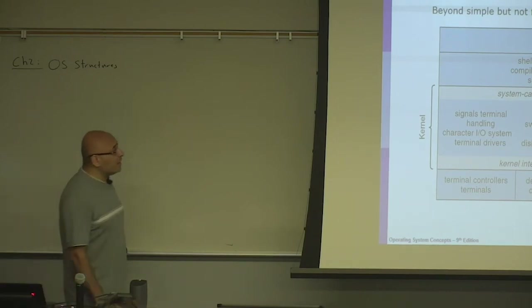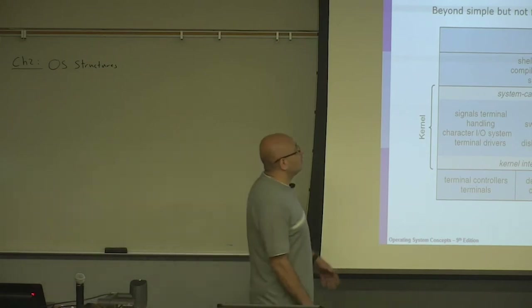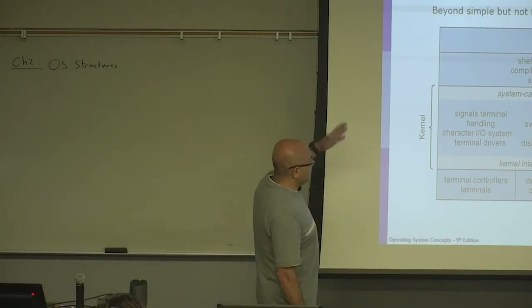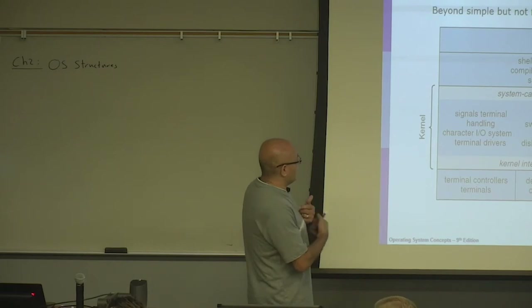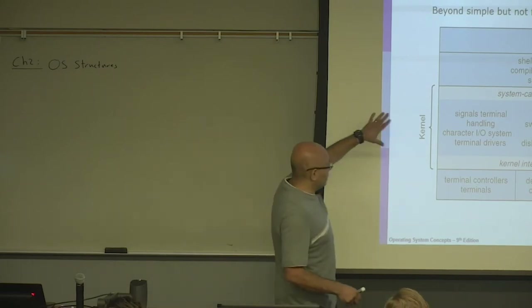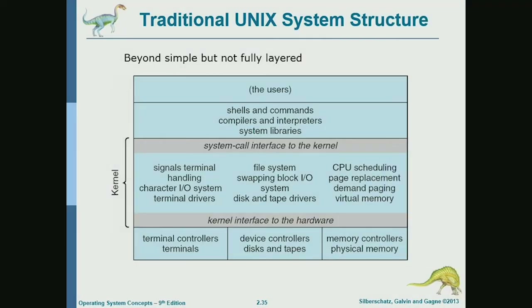If we look at a classical Unix system, there isn't much structure. There is a big kernel that has almost everything in it, with an interface to the hardware and an interface to the user. Between these interfaces are all the services the kernel provides. This is monolithic in the sense that there is a big, unstructured kernel containing everything.